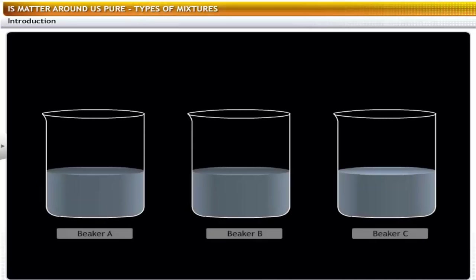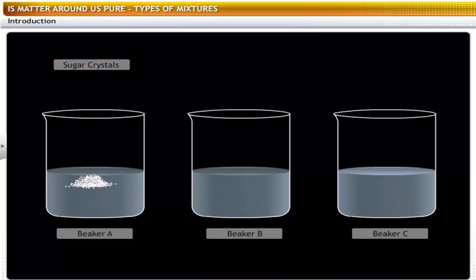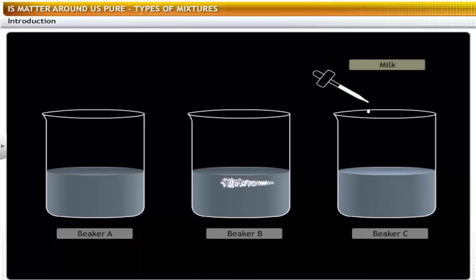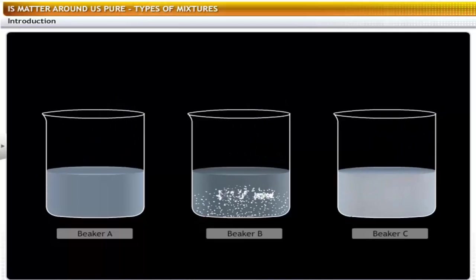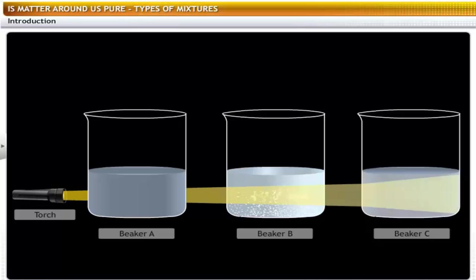Take three beakers with 50 milliliters of water in each. Add a spatula of sugar crystals to beaker A, a spatula of powdered chalk to beaker B, and a few drops of milk to beaker C. Stir well with a glass rod. Particles can be seen in beaker B but not in A or C. Direct a beam of light from a torch through the beakers A, B, and C and observe each beaker from the front. The path of light is visible in case of B and C, but not in A.